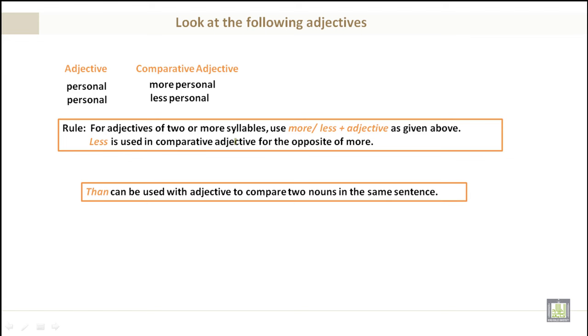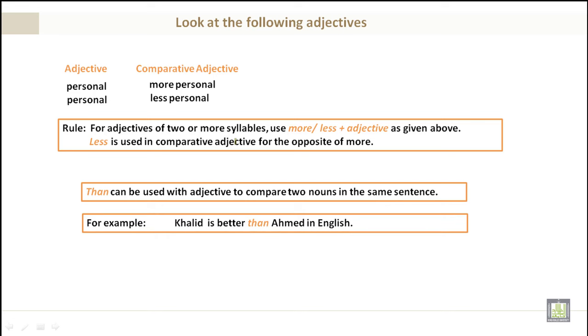Then can be used with adjectives to compare two nouns in the same sentence, for example, two people. Let's take a look. Khalid is better than Ahmed in English.